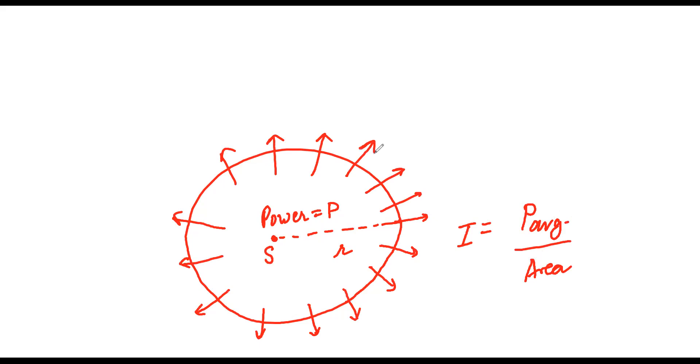And the area of the sphere is 4πr². So what is the intensity? The power of the source divided by 4πr². Do you understand?